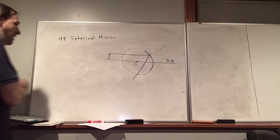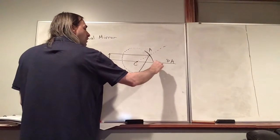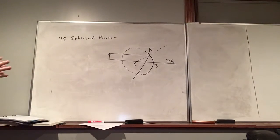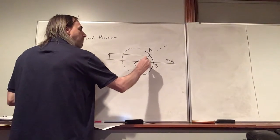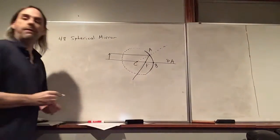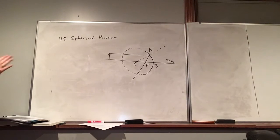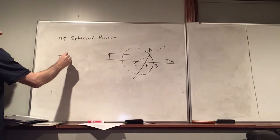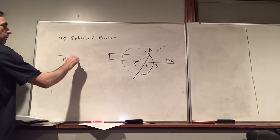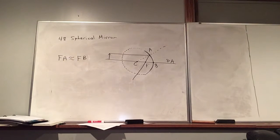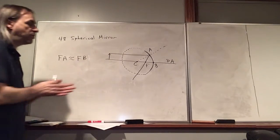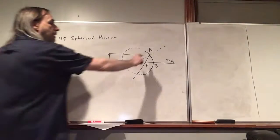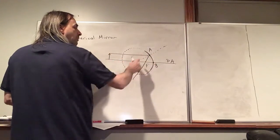Let's say it hits at point A. And let's call this point where the principal axis hits the mirror point B. And let's call the point where the reflected ray passes through the principal axis point F. What I'm going to say is that line segment FA is approximately equal to line segment FB. It's only approximately equal — they don't look equal to each other. FA looks a little bit longer. But if we make this object smaller, if we bring our incident ray closer to the principal axis, the difference between these two line segments becomes smaller.